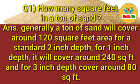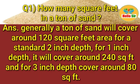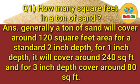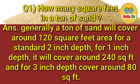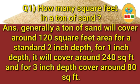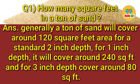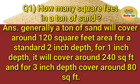So, how many square feet in a ton of sand? Generally, a ton of sand will cover around 120 square feet for a standard 2 inch depth. For 1 inch depth it will cover around 240 square feet, and for 3 inch depth it will cover around 80 square feet.